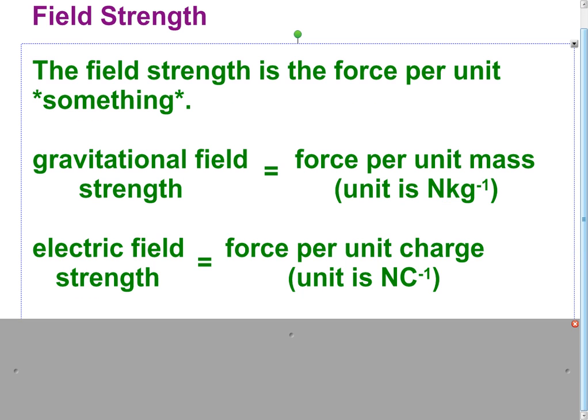The electric field strength is the force per unit charge. So, charge is the thing that interacts with the electric field. Mass is the thing that interacts with the gravitational field. So, the electric field strength is the force per unit charge, and that's in newtons per coulomb. Newtons, the unit of force, per coulomb, the unit of charge.